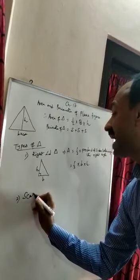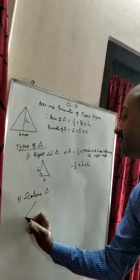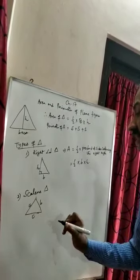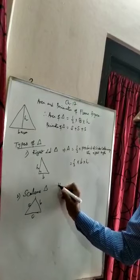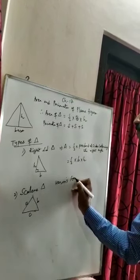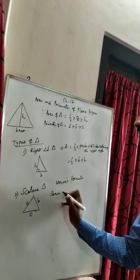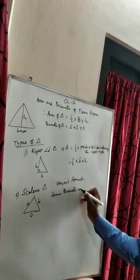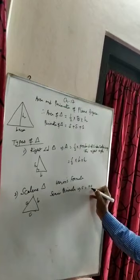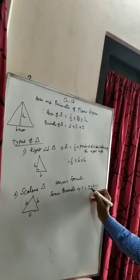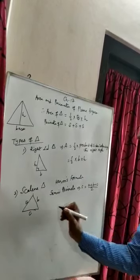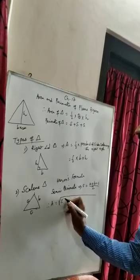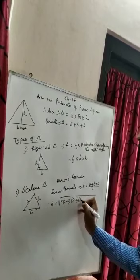Next comes scalene triangle. In a scalene triangle, the three sides are different. This side is taken as A, this side is taken as B, and this side is taken as C. Since all three sides are different, we have to use Heron's formula, where we need to find out the semi-perimeter, denoted by small s, equal to A plus B plus C divided by 2. After you find out the semi-perimeter, we can find out the area: area equal to root over of s into s minus A into s minus B into s minus C.